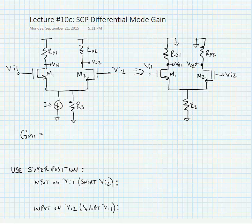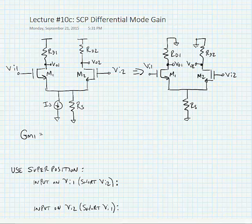We're now going to start examining the differential mode gain for the source coupled pair. Here we see our original source coupled pair and we're going to replace it with an equivalent model for the small signal operation. We replace our supply voltages with grounds and our DC current sources with open circuits, leaving us with the model on the right.